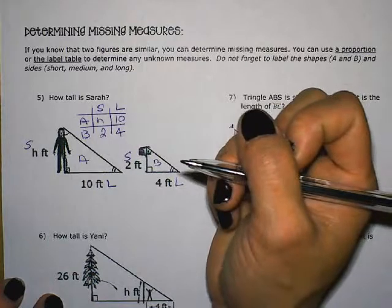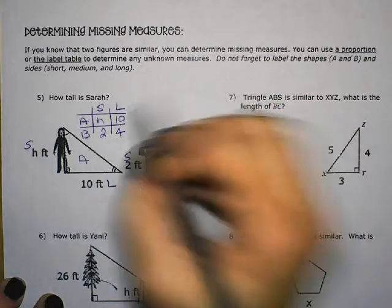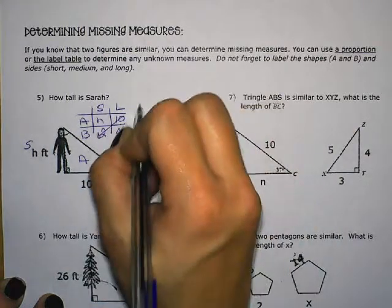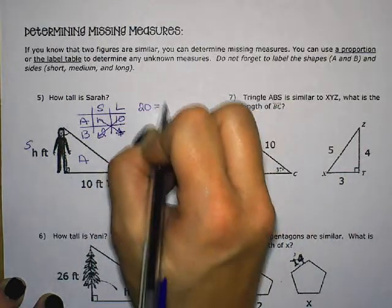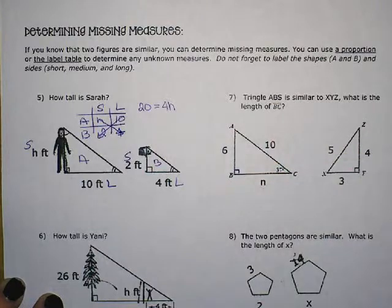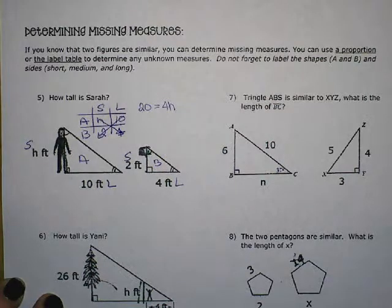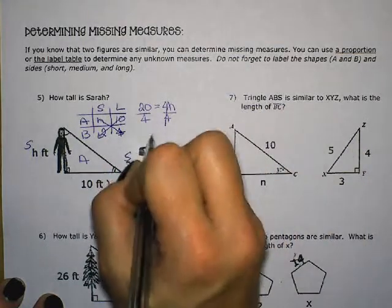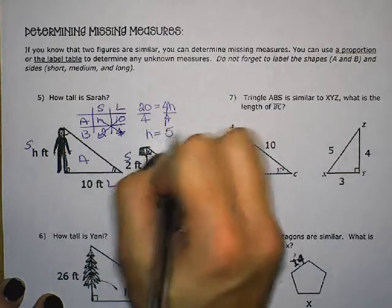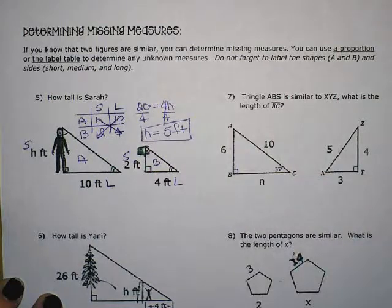That is correct. You are going to cross multiply. Therefore, I'm going to cross multiply 10 times 2 and get 20. Cross multiply h times 4 and get 4h. Then I need to divide both sides of the equation by the coefficient. And don't forget, the coefficient is the number that is next to the variable. So I'm going to divide by 4. And Sarah is 5 feet tall. 20 divided by 4 is 5.